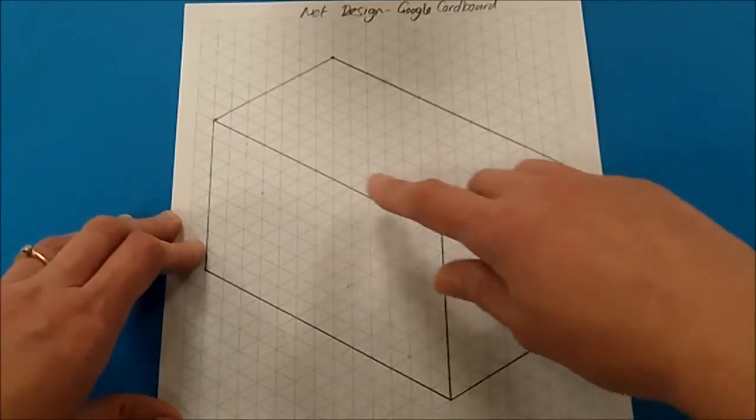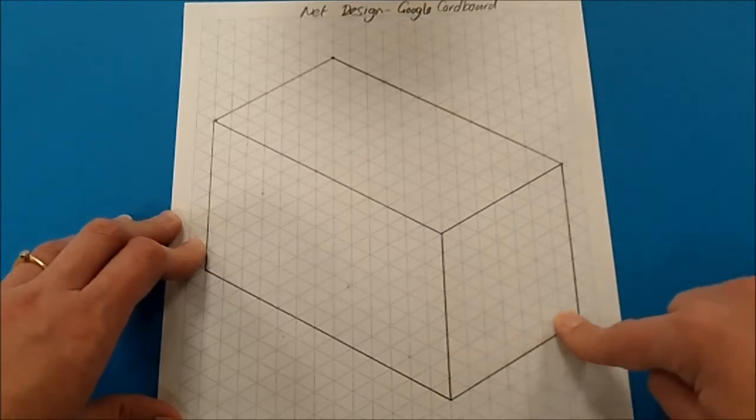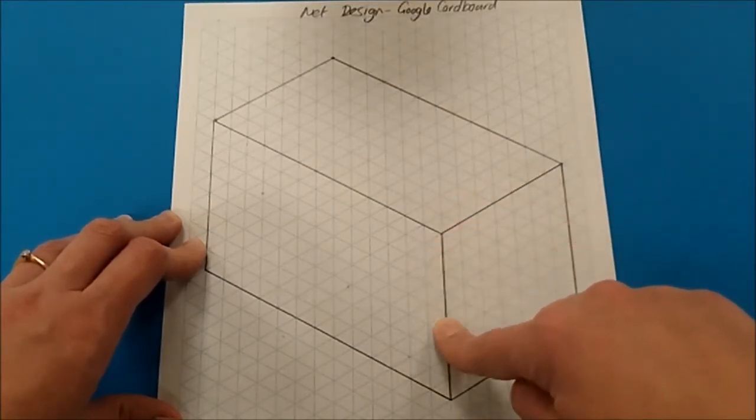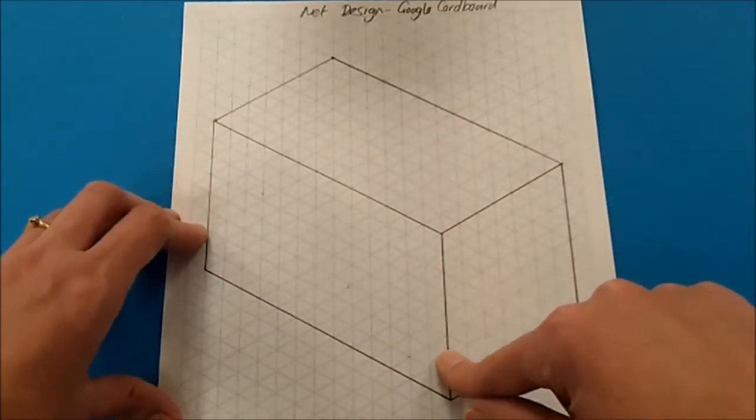So before we start I'd like you to draw for me this cuboid. Note it is a cuboid and not a cube. If it was a cube all sides would be exactly the same, whereas a cuboid you've got two lengths the same and these two lengths the same.